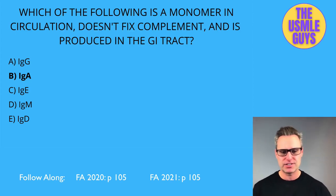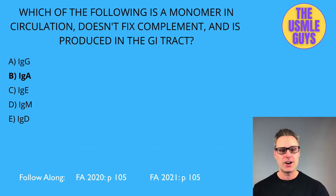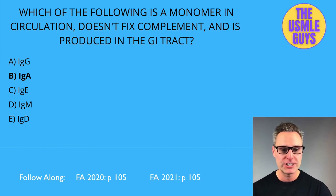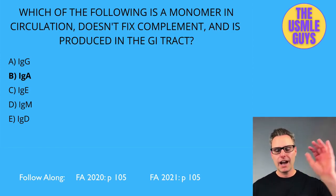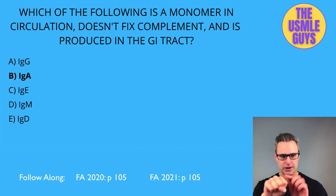IgD is found in the serum and on the surface of many B-cells, but its function is not well understood — don't lose sleep over IgD. Importantly, a mature but naive B-cell expresses both IgM and IgD on its surface before activation.